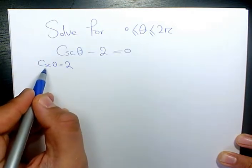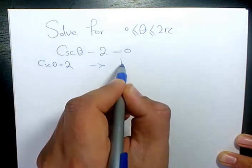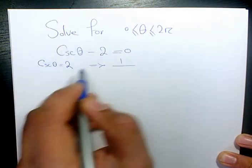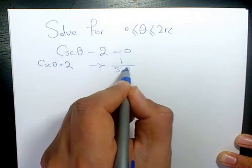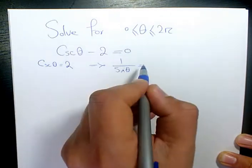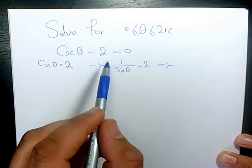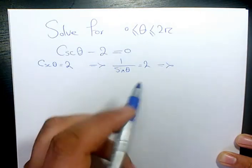And here, cosecant as you know is the inverse of the sine function. So instead of cosecant theta, I will write 1 over sine theta equals 2.